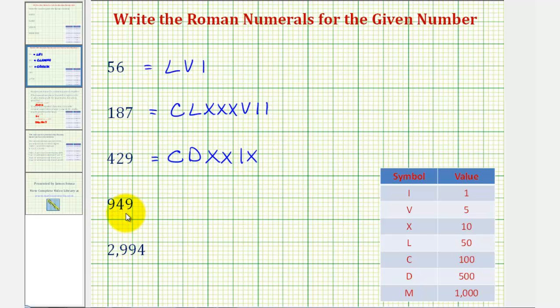For 949, we'll start with 900. Using the subtraction principle, we'll put 100 before 1,000, or a c before an m. So there's 900.